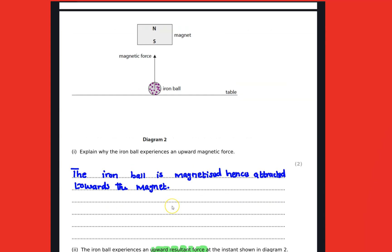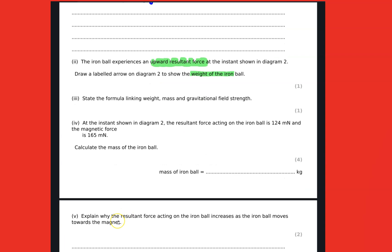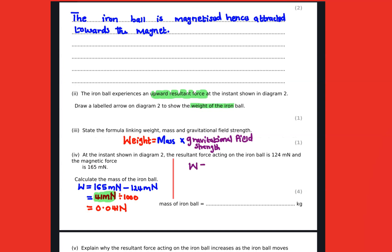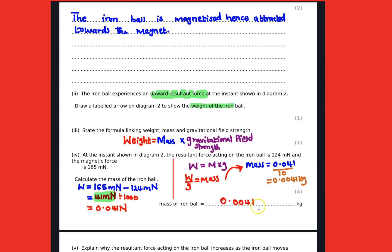The direction of the weight is acting downwards. Weight equals mass times gravity, or gravitational field strength. We are given the force value, so we divide and substitute into the formula in order to get our answer.